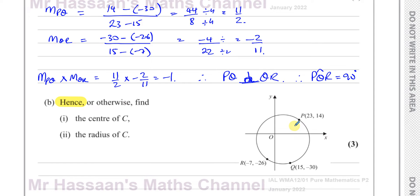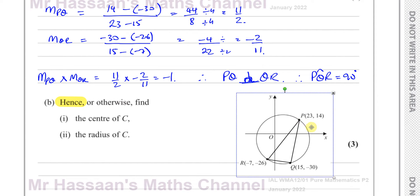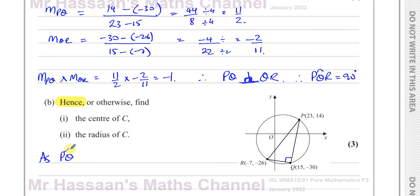Going back to what you learned in IGCSE maths — you should have learned about angles in circles. Whenever you have an angle subtended on the circumference that is 90 degrees, like angle PQR, that means it must be subtended by the diameter. Any angle that stands on the diameter will always be a right angle. So since angle PQR is 90 degrees, PR must be the diameter.